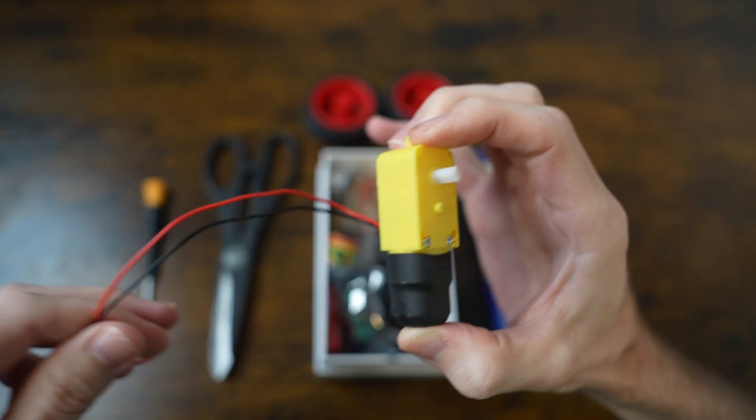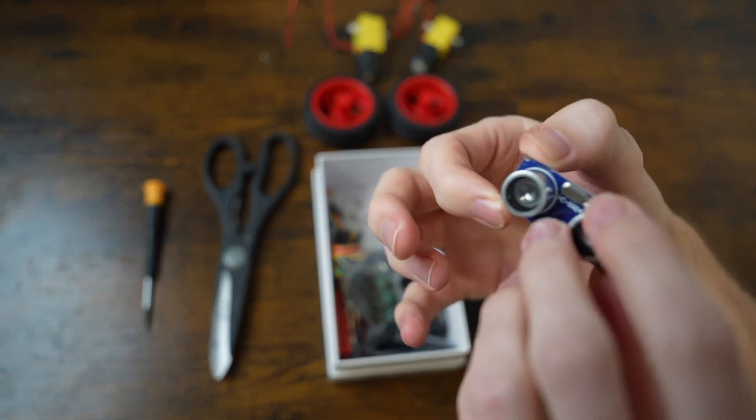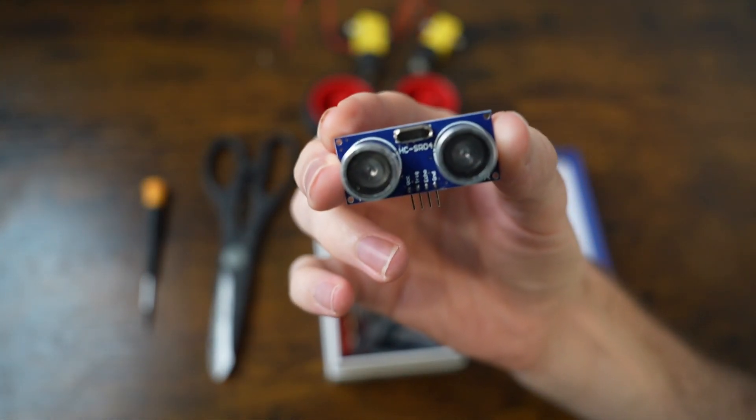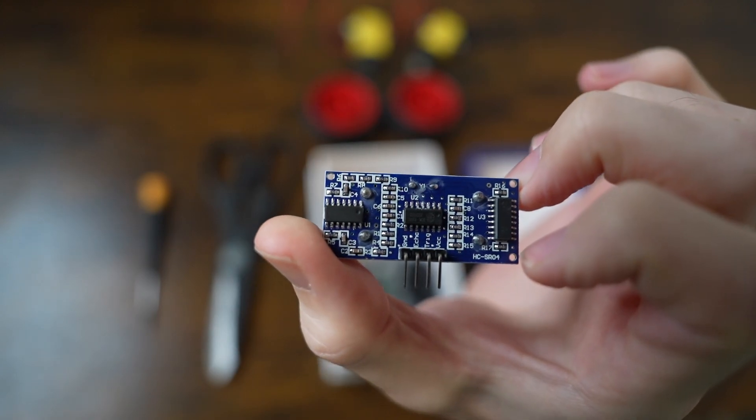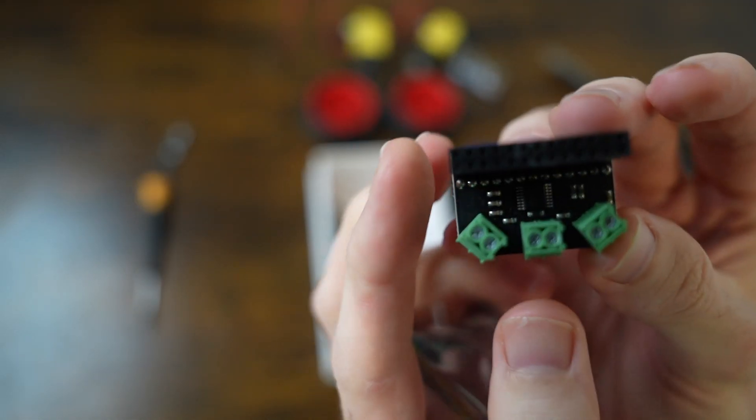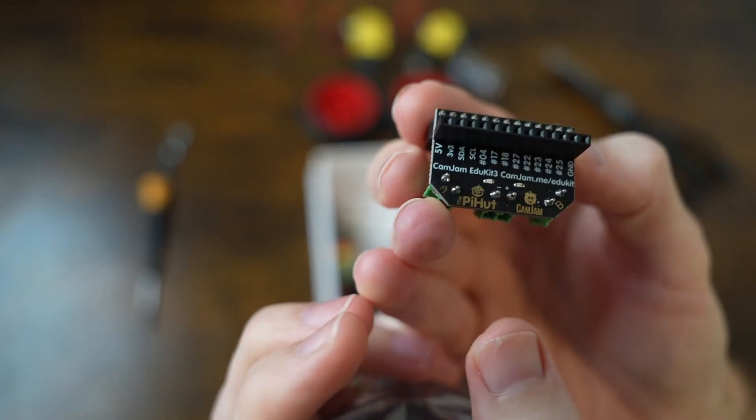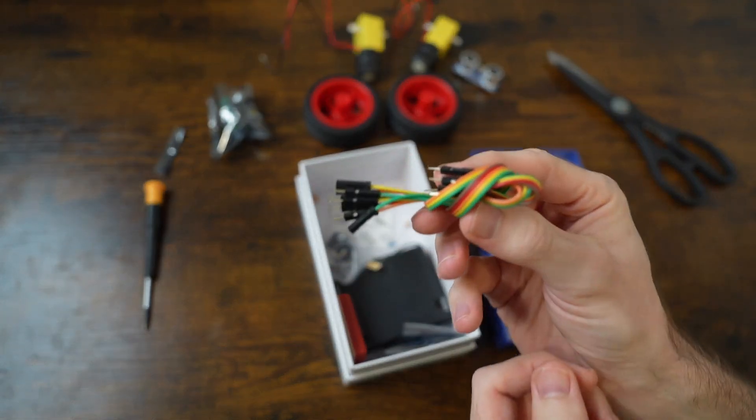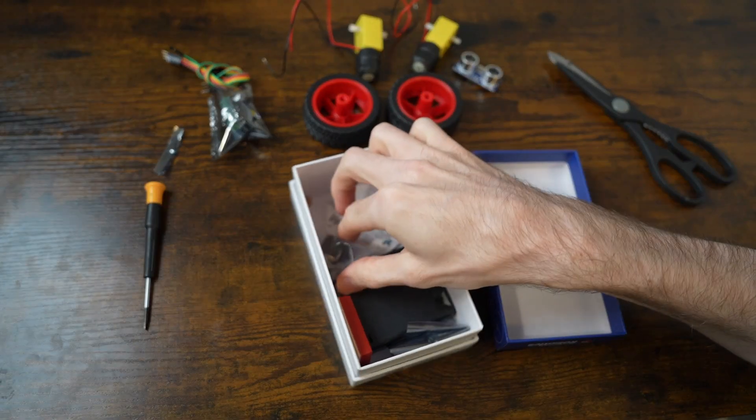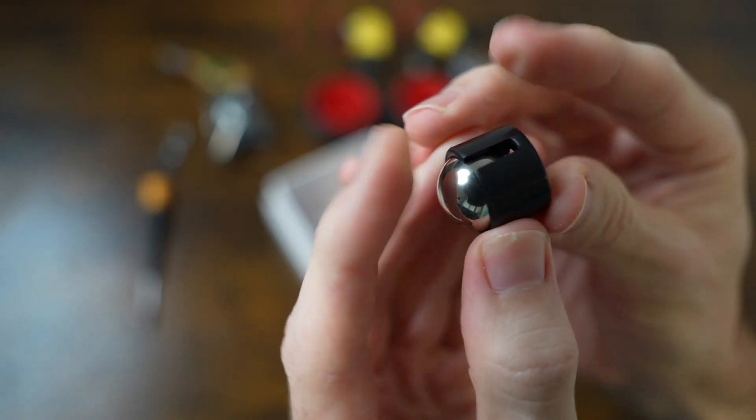the two motors that move the wheels, a short-range distance sensor, an anti-static bag containing the motor control board, a set of wires for connecting sensors to the Raspberry Pi, and a caster which will attach nearer the front of the robot. It moves in all directions.